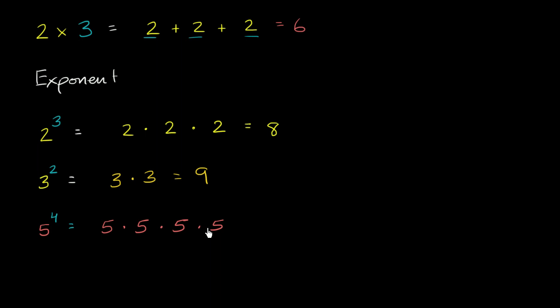And we are multiplying them. We're not adding them. This is not 5 times 4. This is not 20. This is 5 times 5 times 5 times 5. So what is this going to be? Well, 5 times 5 is 25. 25 times 5 is 125. 125 times 5 is 625.